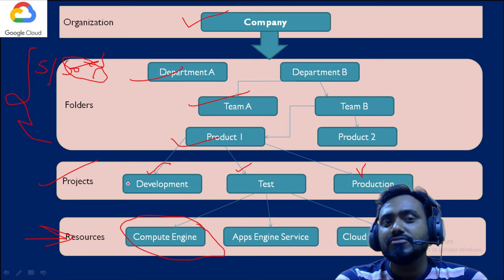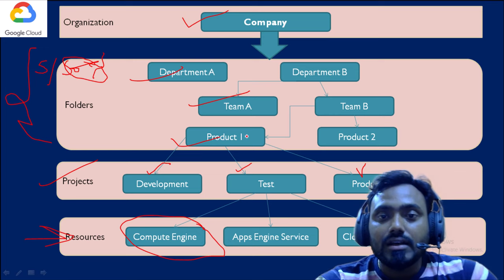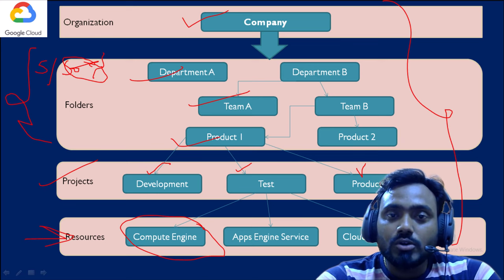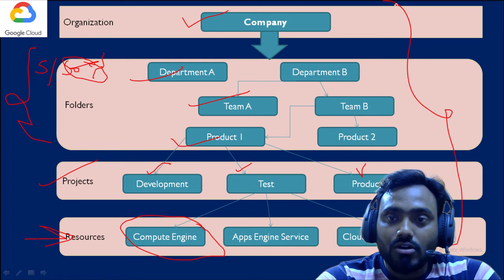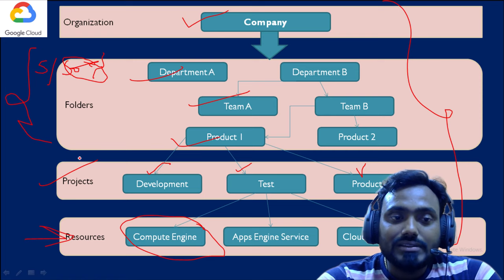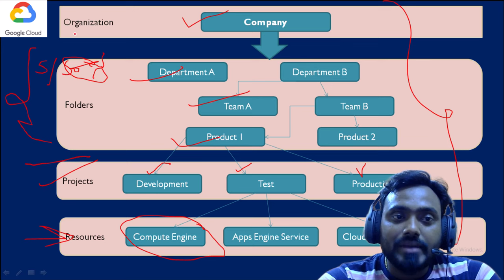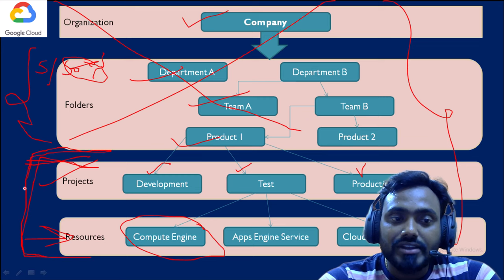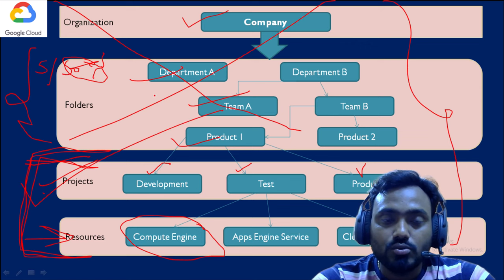The key benefit of this hierarchy: if an employee creates all these resources and then leaves the organization, the hierarchy and resources won't be deleted. One thing to note — on a free account, you won't have the organization and folder options. Only the project level and the resources under it will be available on a free account.